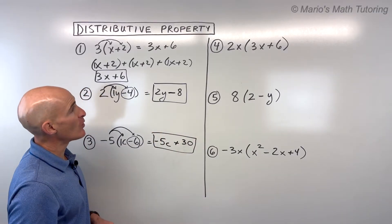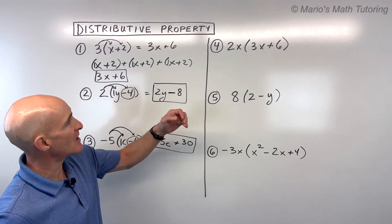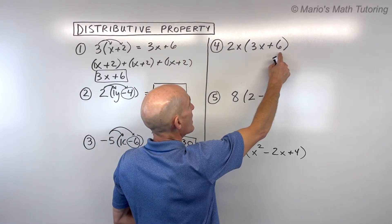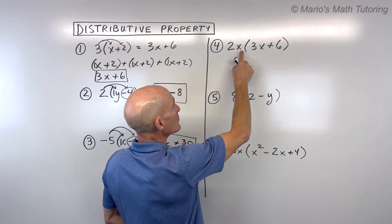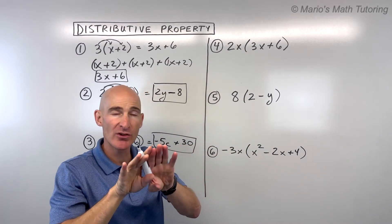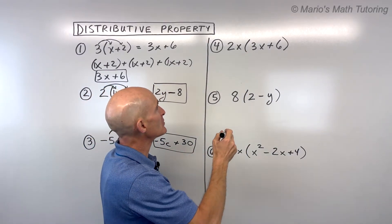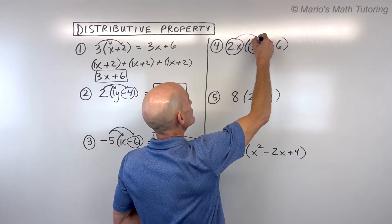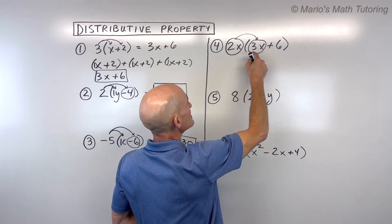Let's try some more examples. If you want, you can pause the video and try some of these on your own. So for number four now, same thing. We have 2x times the quantity 3x plus 6. We know this is multiplication because these are right next to each other, side by side, with nothing in between. Again, we're going to capture, capture, and distribute like that. So 2 times 3 is 6.